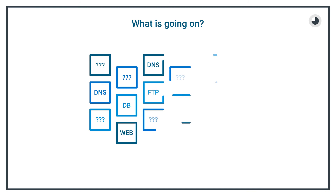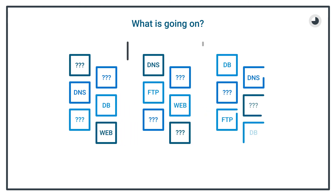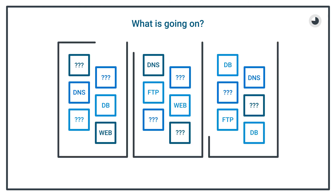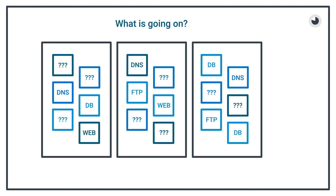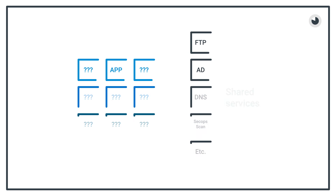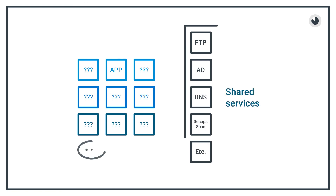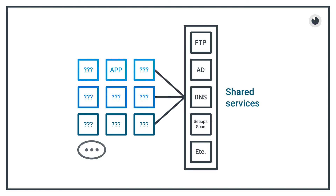That's where we have to start — by getting an understanding of how our workloads communicate and using those patterns to start to decipher how different components break out. This gives us an understanding of our application environments, which becomes a baseline to create new security policy that becomes micro-segmentation.